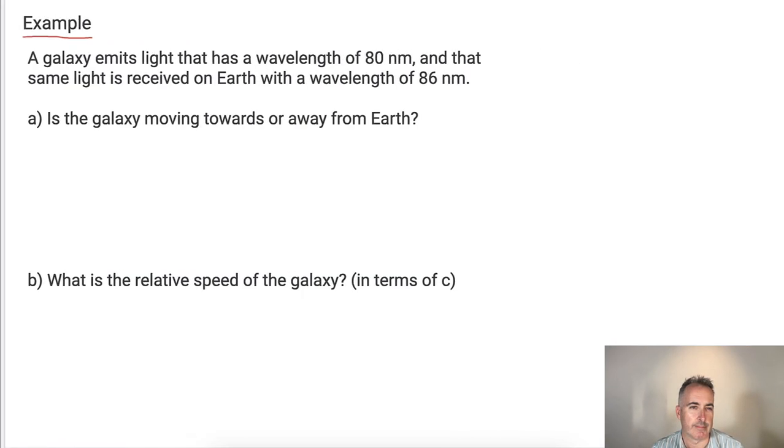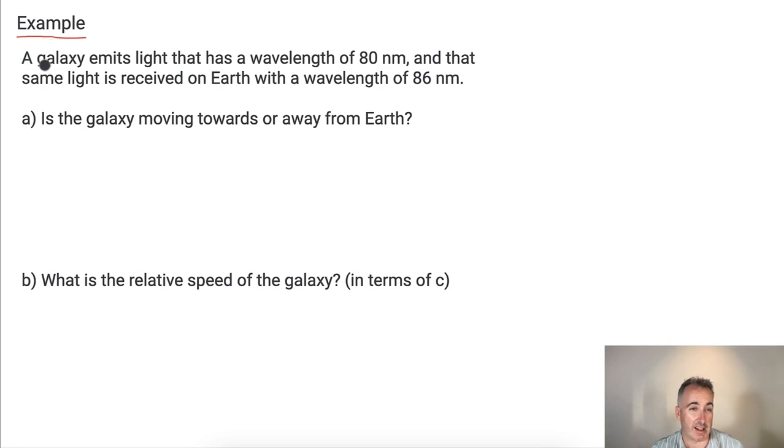So let's do an example. If we look at this one here, we have a galaxy and it emits light that has a wavelength of 80 nanometers. And that same light is received on Earth with a wavelength of 86 nanometers. So keep in mind, it emits light at this and it's received on Earth as 86. So first of all, is the galaxy moving towards or away from Earth? Let's first figure that one out.